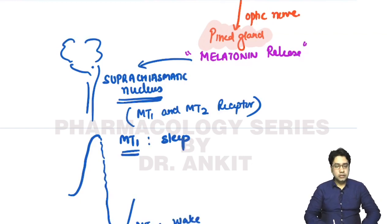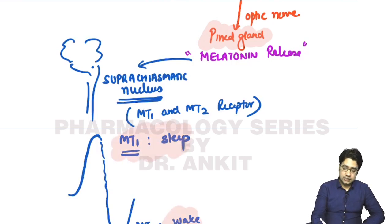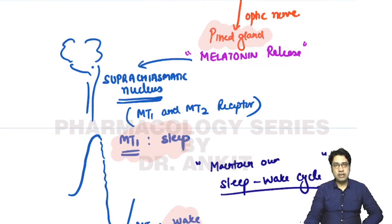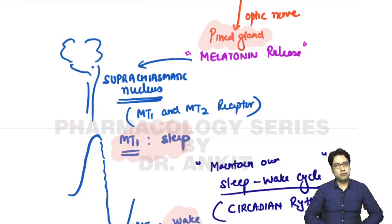When melatonin levels decrease, it acts on MT2 receptors, which wake a person up. So melatonin in high dose causes sleep, in low dose it maintains wakefulness — overall, melatonin maintains our sleep-wake cycle, also known as circadian rhythm.